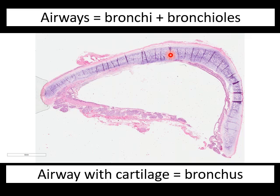Cartilage is a definitional feature of a bronchus. Airways with cartilage are called bronchi; airways without cartilage are called bronchioles, which are much smaller branches. The lumen is the space within the bronchus where air flows. The inside layer is the mucosa and submucosa — quite thin compared to the cartilage, which forms the bulk of the bronchial wall. On the outside is the serosa, which is part of the interstitium discussed in the previous lecture on alveoli.